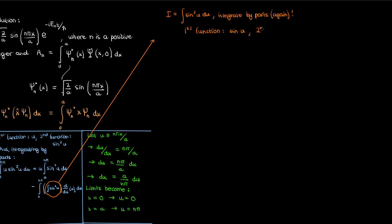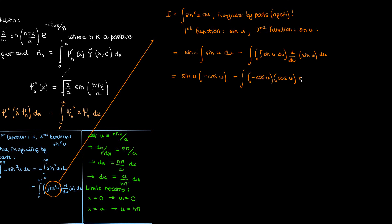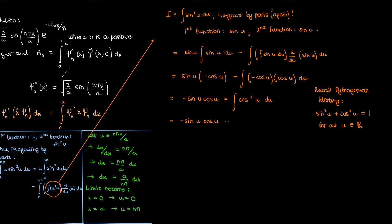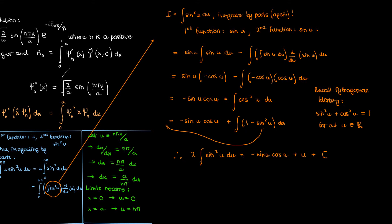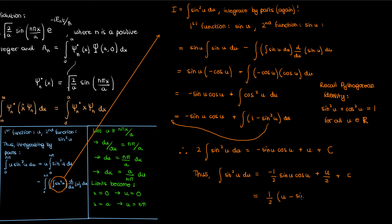For the integral of sine squared, I'll use integration by parts with first and second functions both equal to sine u. This gives: sine u times negative cosine u, minus the integral of negative cosine u times cosine u. Simplifying and applying the Pythagorean identity (sin² + cos² = 1), I move the sine squared integral to the left to get 2∫sin²u du = −sin u cos u + u. So the integral of sin²u equals ½(u − sin u cos u) plus a constant — I'll call this equation 1.